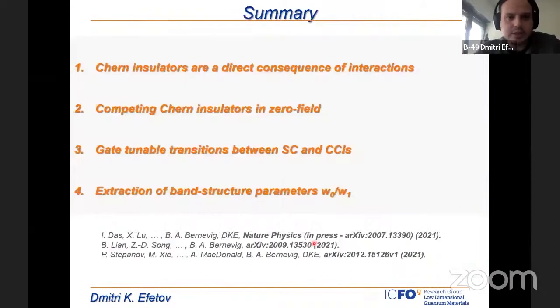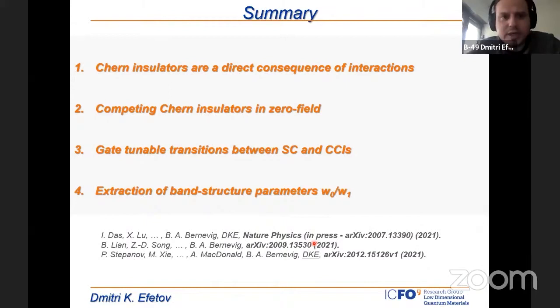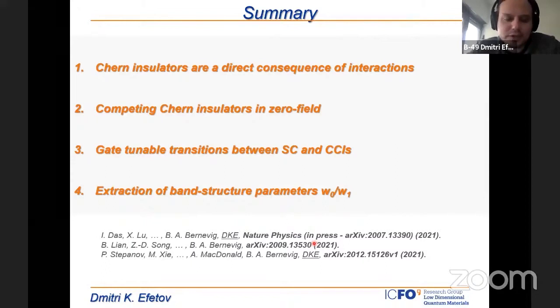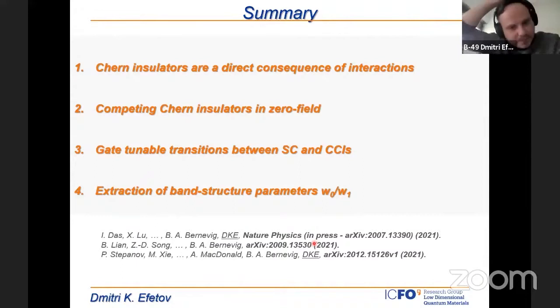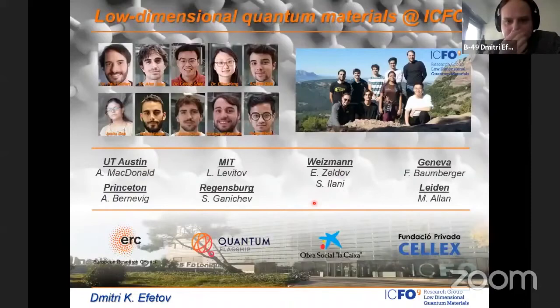In summary, we are now on the way to better understand the nature of symmetry breaking in the system and the nature of the ground states in the flat bands. We start realizing that topology is extremely important here — we observe a very robust sequence of Chern insulators at high field. In one device we also observe these features down to zero field, suggesting that symmetry breaking can come from interactions directly. Last but not least, we have observed Landau level crossings in higher fields, allowing us to fix the band structure parameters of the Bistritzer-MacDonald model.